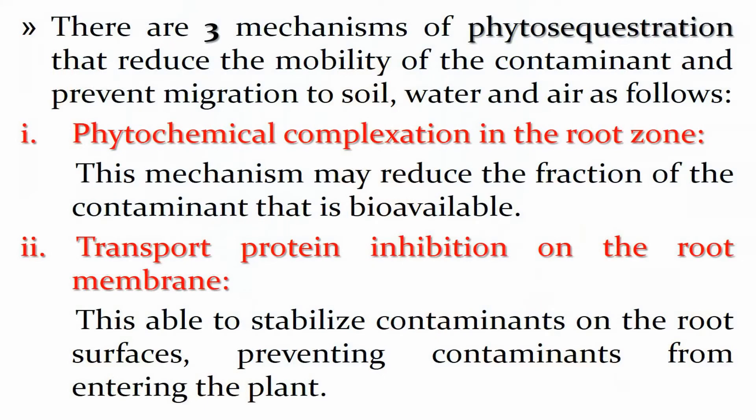The first mechanism is phytosequestration. In this mechanism, plants are able to reduce the mobility of contaminants and prevent their migration to the air, water, and even the soil. Phytosequestration contains three different sub-mechanisms.